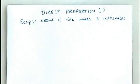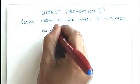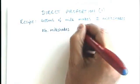This video is going to introduce you to the idea of direct proportion. Now, the classic example of direct proportion is a recipe. Let's imagine that we've got this recipe which requires 400 milliliters of milk for two milkshakes. We could write a table which was the number of milkshakes and the amount of milk.